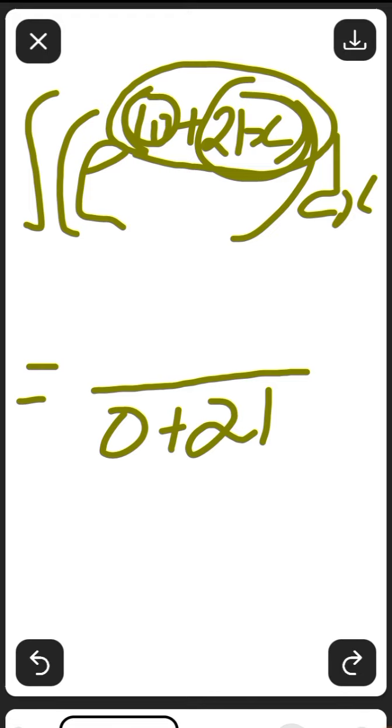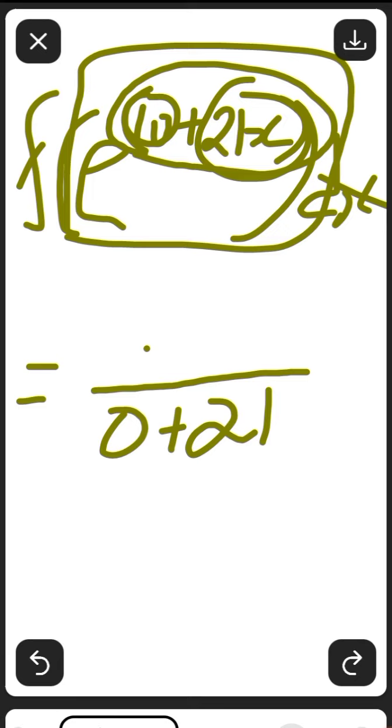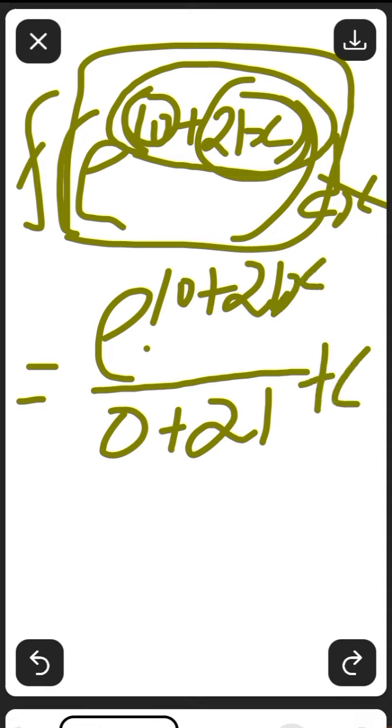Then go to this upper side and repeat everything. Excluding this, we're going to have exponential 10 plus 21x. Then you put plus C. That would be the answer.